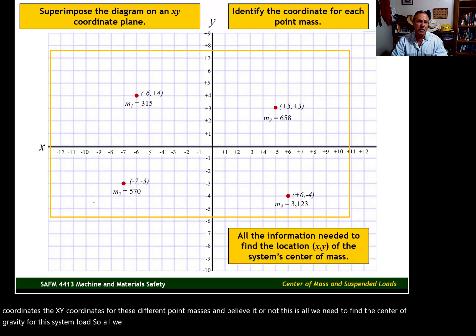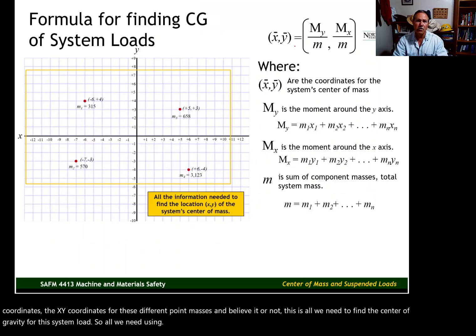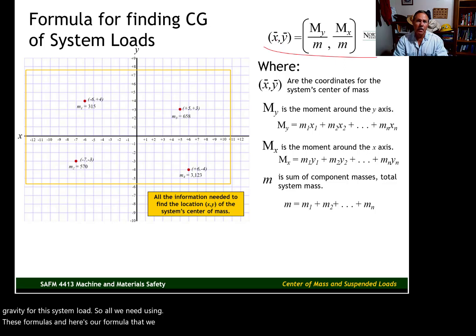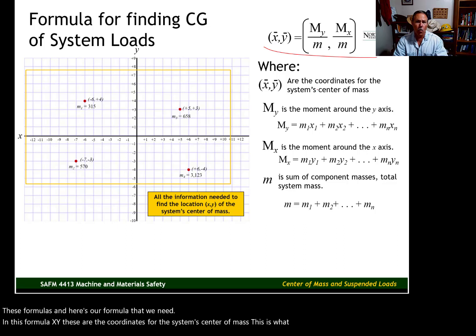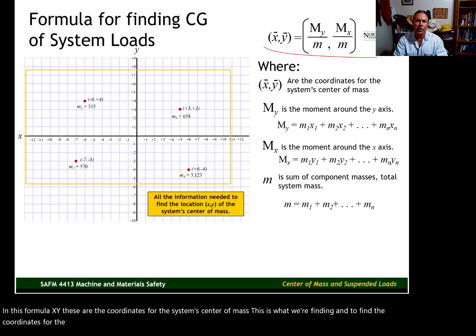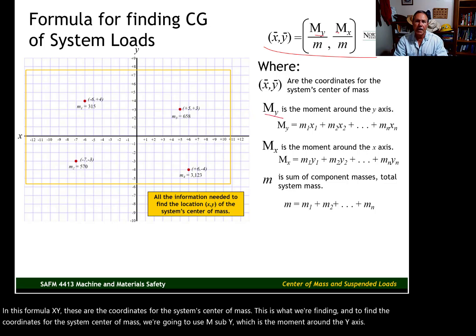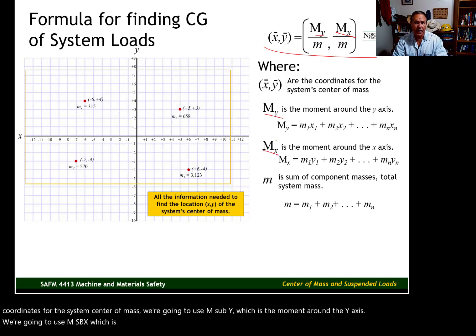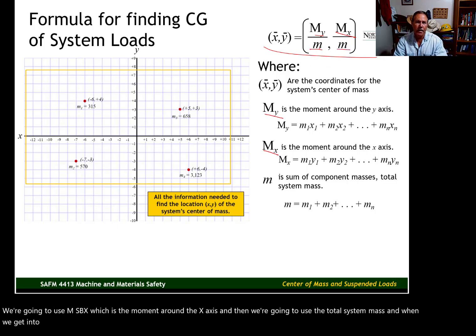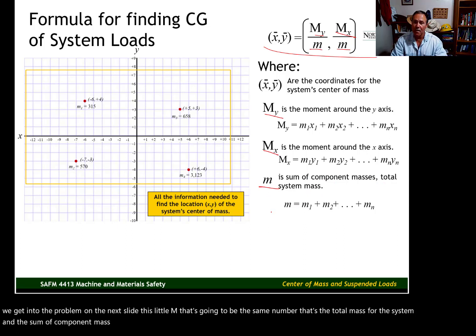Here's our formula. X and Y are the coordinates for the system's center of mass — that's what we're finding. To find those coordinates, we're going to use M sub Y, which is the moment around the Y axis; M sub X, which is the moment around the X axis; and the total system mass. The total system mass is both the little m in the formula and the sum of component masses. The math is straightforward once we get everything laid out — nothing high-level in terms of mathematical operations.